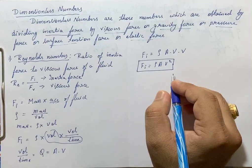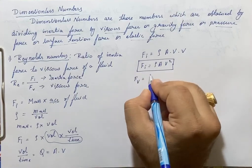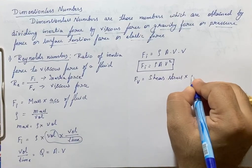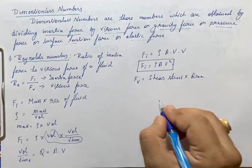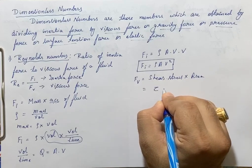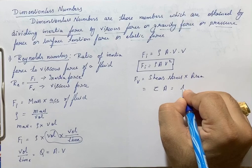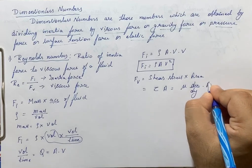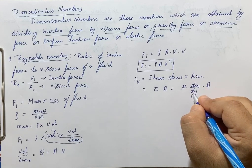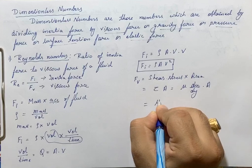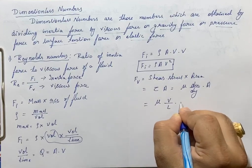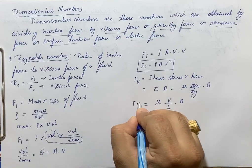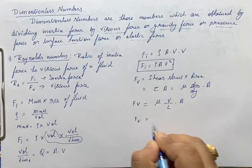Viscous force Fv is shear stress into area. Shear stress tau equals mu into du/dy. So Fv equals mu into du/dy into area A. Here du is velocity and dy is distance, so Fv equals mu into velocity by length into area. Area can be written as L into L, giving Fv equals mu V L.